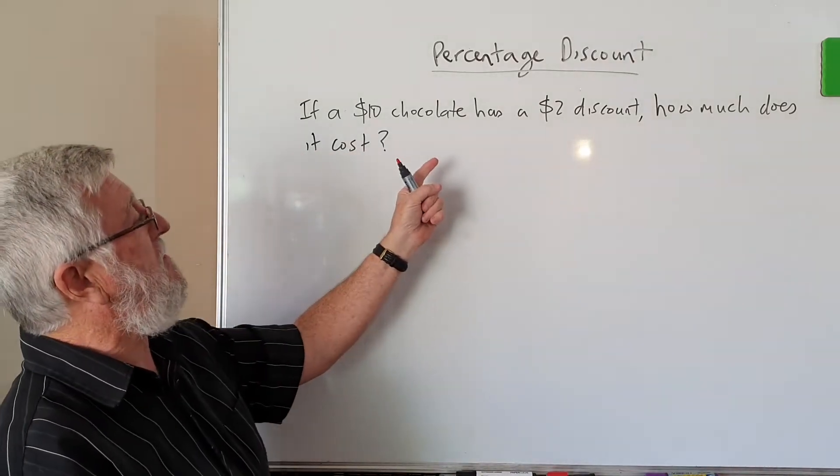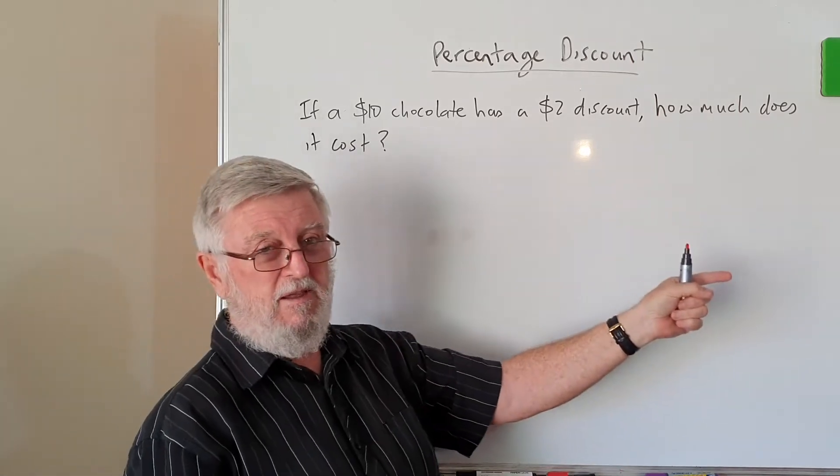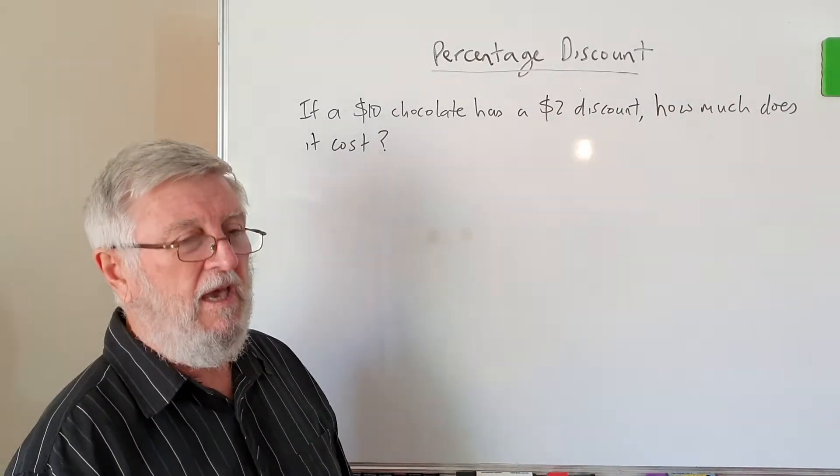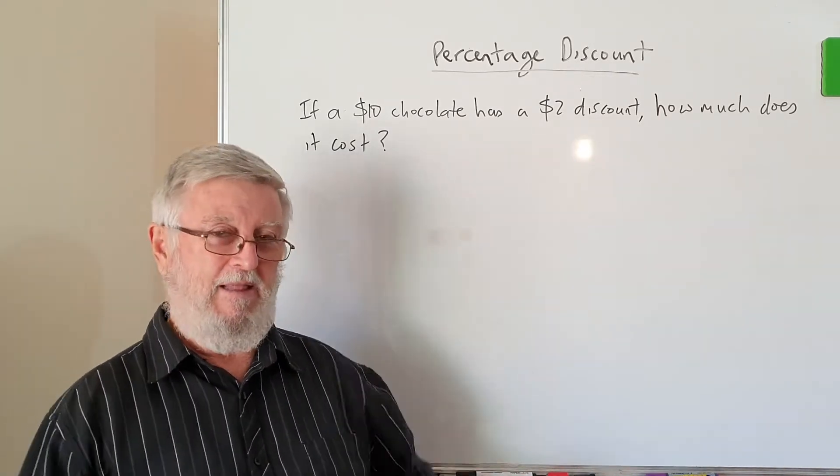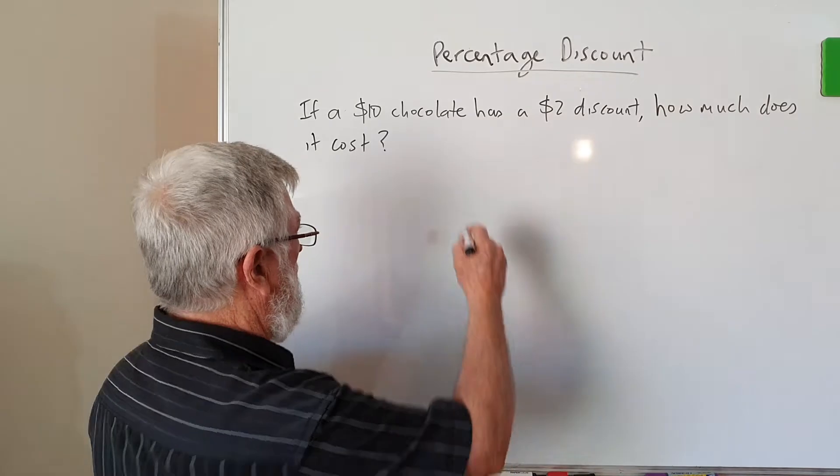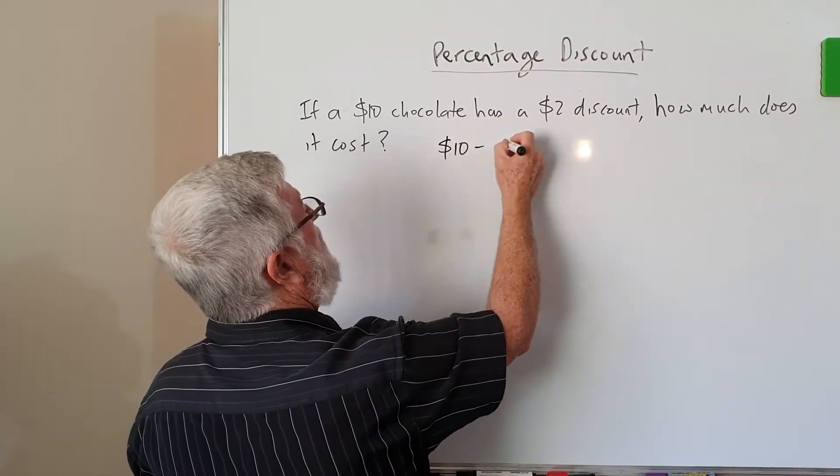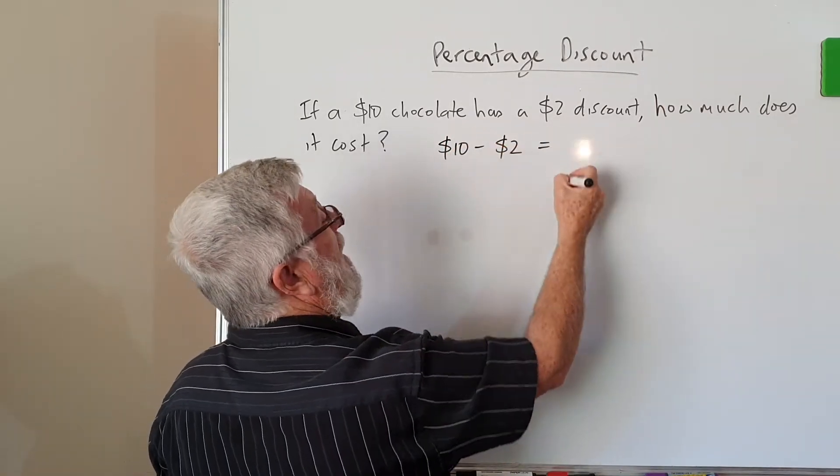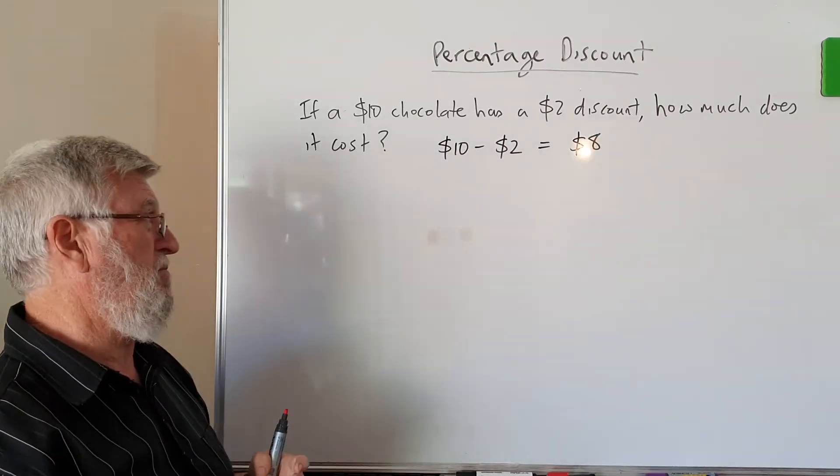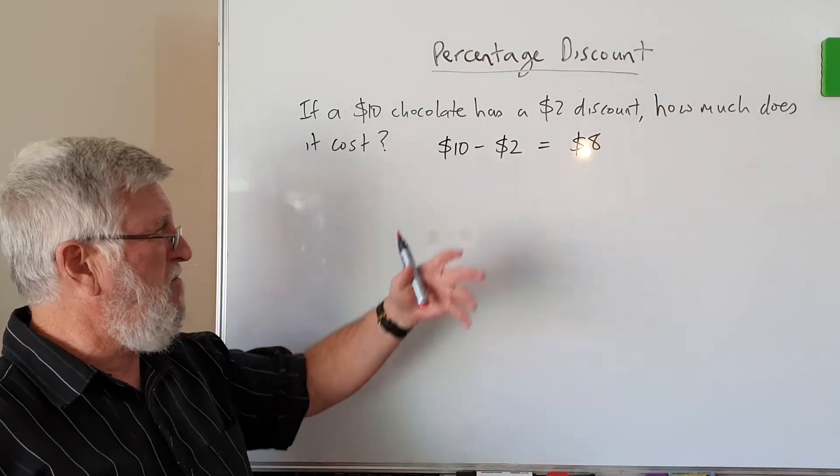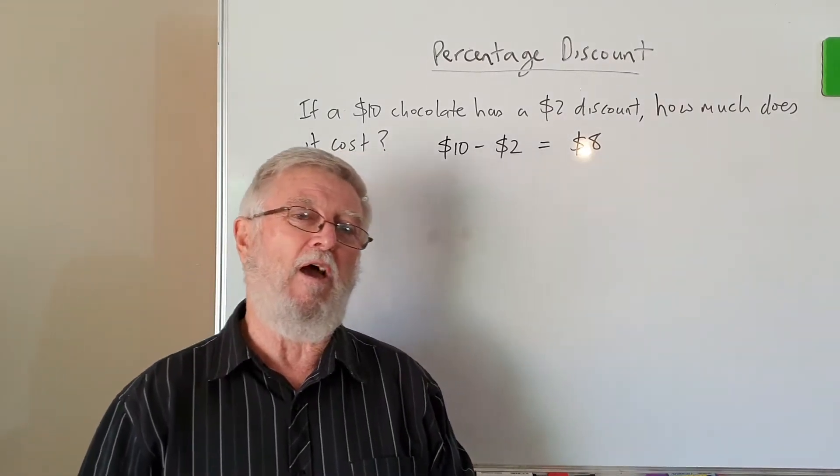If a $10 chocolate has a $2 discount, most people are okay. I ask people, do you pay more or do you pay less if you get a discount? People will say I pay less. So we get the $10 and subtract the $2 and end up paying $8. That'd be nice. A lot of things would be very easy if we were written just a discount like that.